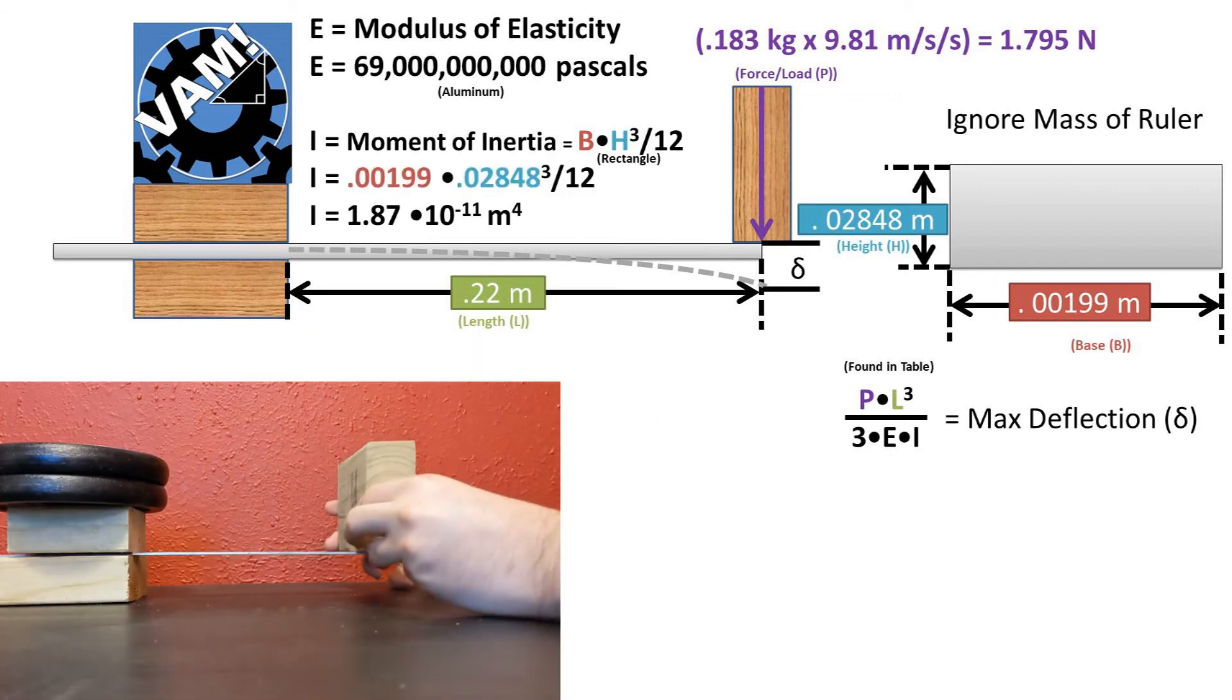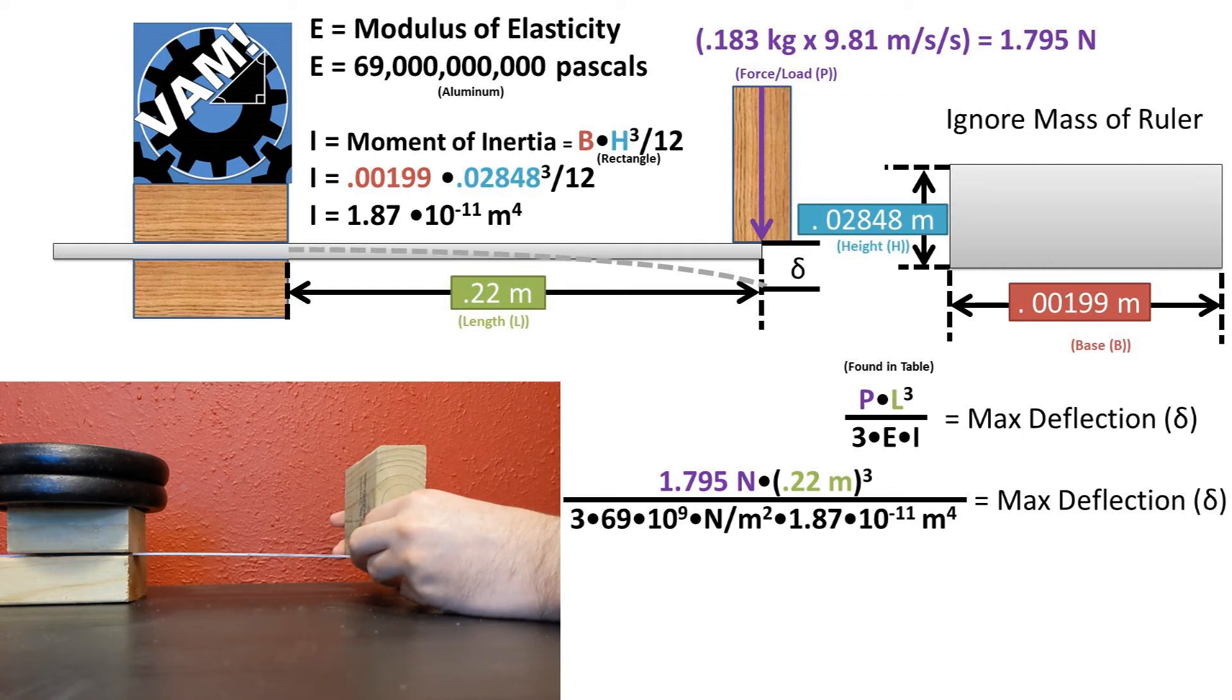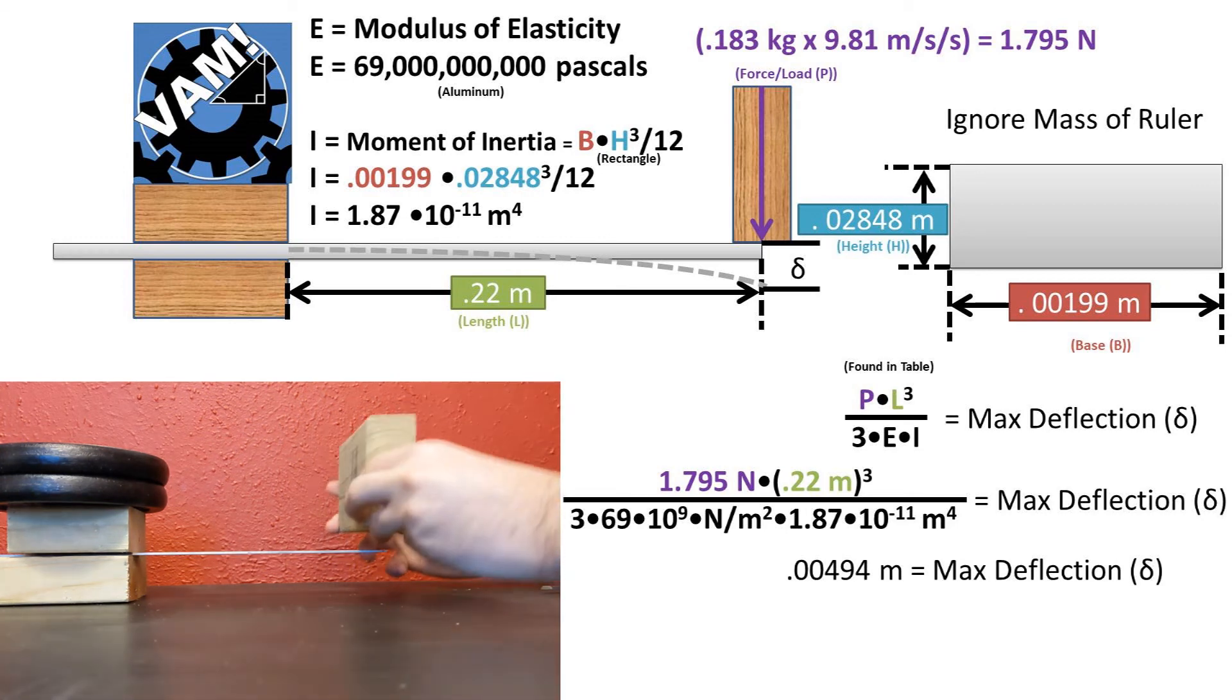Plugging in our height and base, we get the displayed value. Now we can plug in all of our numbers that we found into the max deflection formula. Pressing the NrT on our calculator, we get a deflection of 4.94 millimeters.